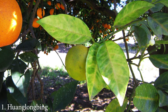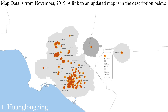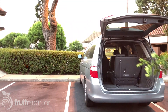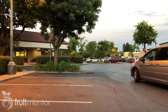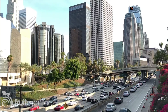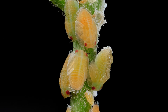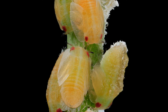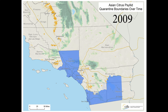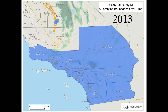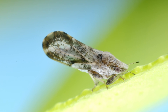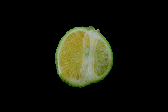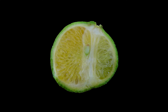Huanglongbing, or HLB, is the deadliest known citrus disease and is spreading very rapidly in California. This incurable bacterial disease is spread both by people moving citrus trees, cuttings, and fruit, and also via an exotic insect called the Asian citrus psyllid that is now widespread in Southern California and trying to gain a foothold in other regions of California. Before killing a tree, HLB causes misshapen and bad tasting fruit.